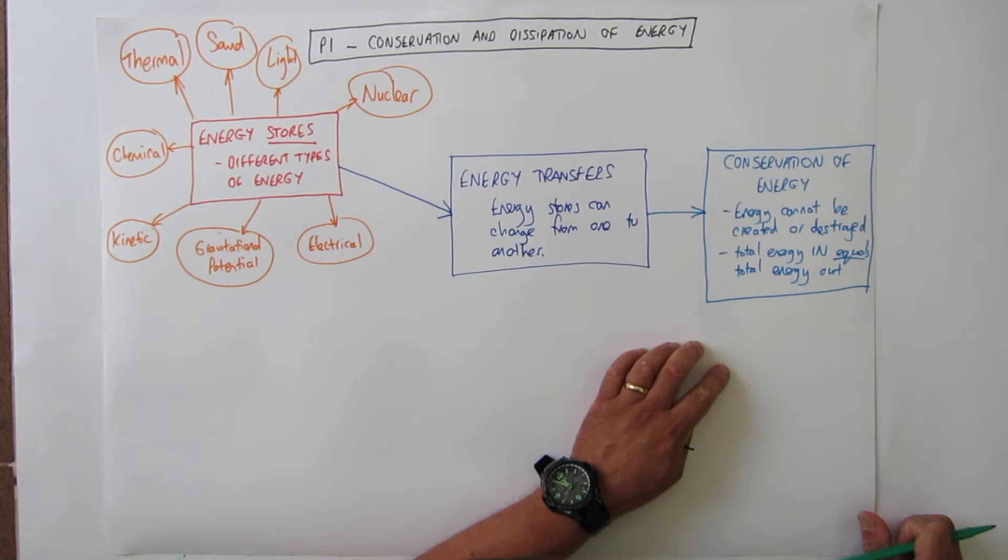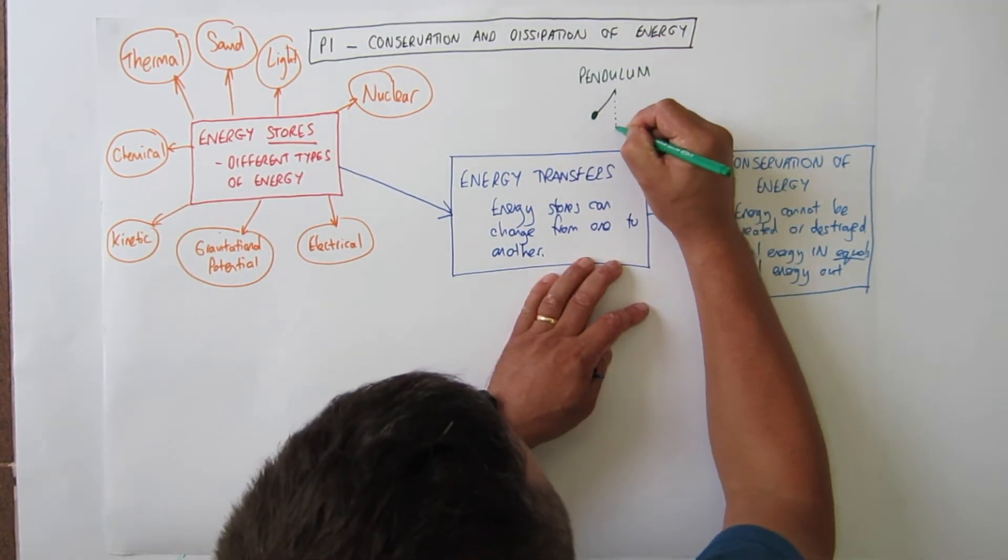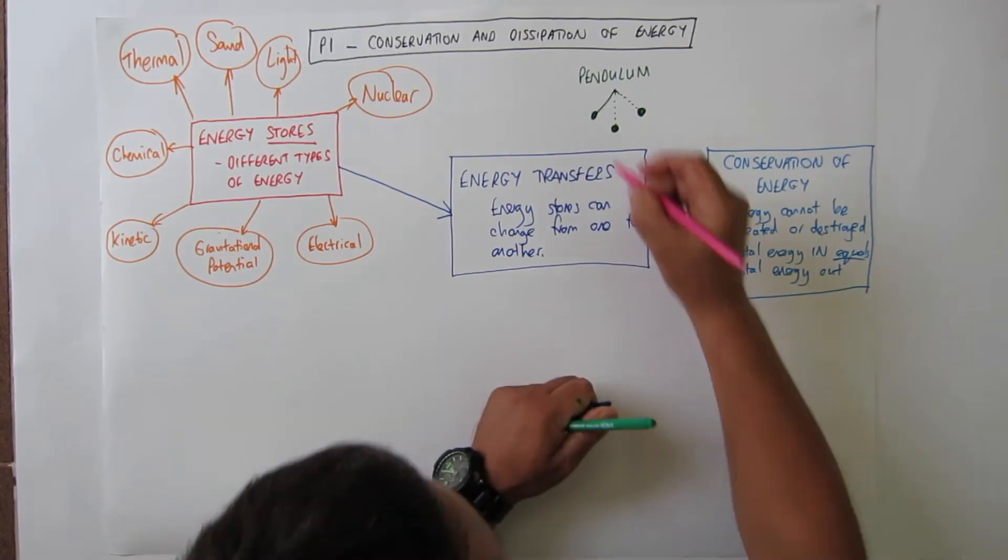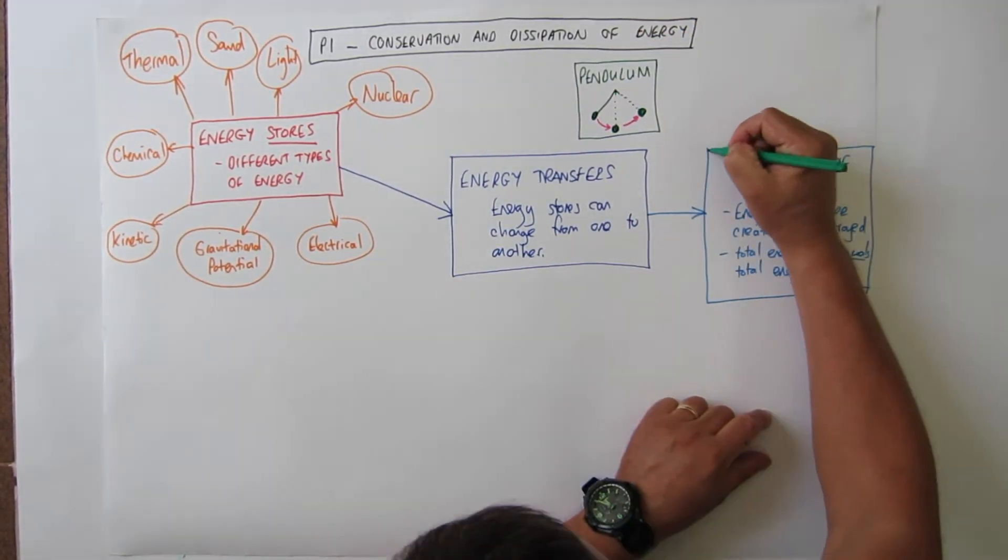Now you probably looked at various examples of conservation of energy in practice. You would have looked at the pendulum. Where there's a constant change or constant switch between GPE to kinetic energy and back to GPE again.